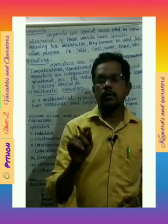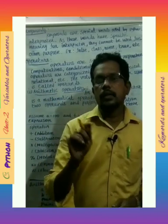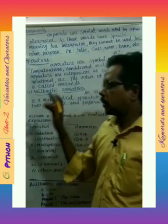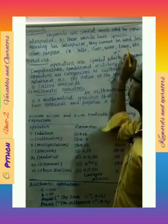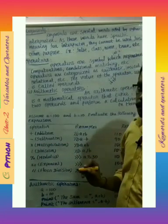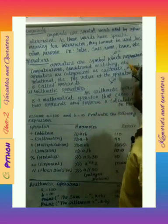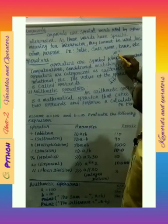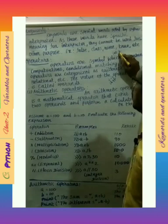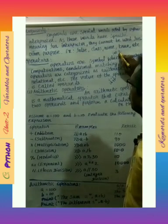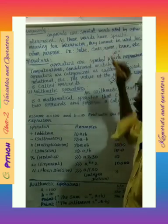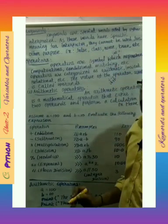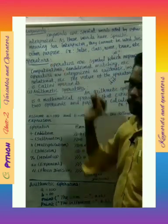In your book they have given 33 keywords. I have written here only four keywords: false, class, none, and true. For example, when declaring a variable — 'a' is the variable name — you should not use 'false' as a variable name because 'false' is one of the keywords.